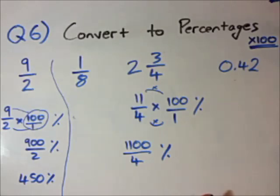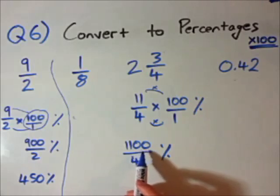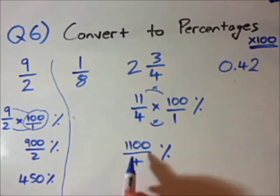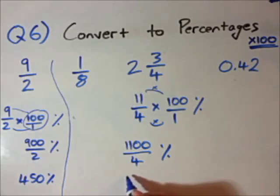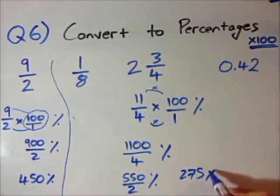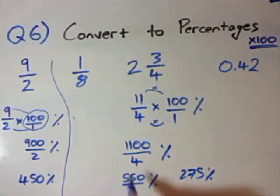Now, 4 might go into 1100. I'm not entirely sure. Let's take a highest common factor of 2 out. I know that 2 goes into 1100. Now, 2 goes into that 550 times. And 2 goes into 4 twice. Still is a percentage. I'll go over here now. 550 divided by 2 is just 275. So we didn't have to go and do the division because 4 went into 1100. So our final answer to this is 275%.